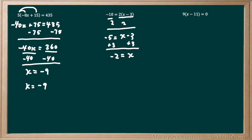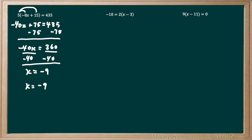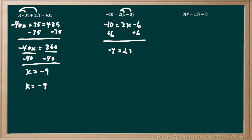Now we're going to do the second method of distributing this 2 inside everywhere in the brackets. We're going to multiply this 2 by the x, and then multiply the 2 by negative 3. So we get negative 10 equals 2x minus 6. Now we want to isolate for x, so we want to get rid of this negative 6 by adding 6 to both sides. We draw our line and we're left with negative 10 plus 6 is negative 4 equals 2x. To get rid of the multiplication, we divide both sides by 2, leaving us with negative 4 divided by 2, which is negative 2, equals x. Both methods work — it's just whatever way you want to pick.